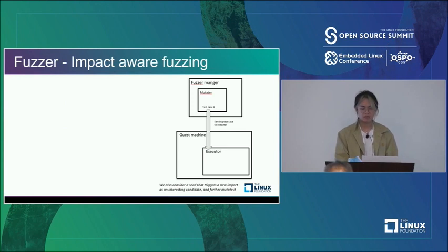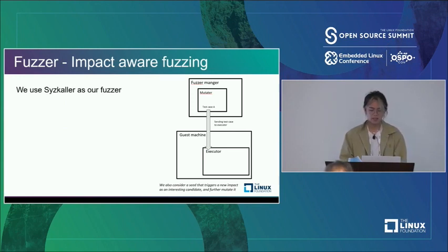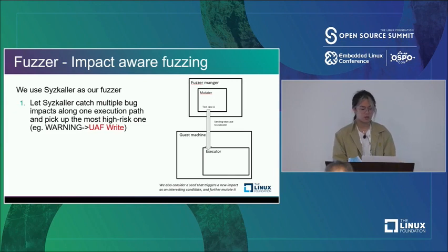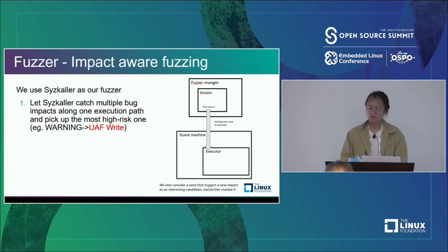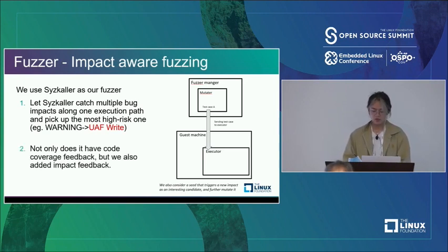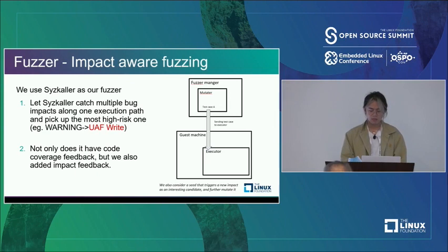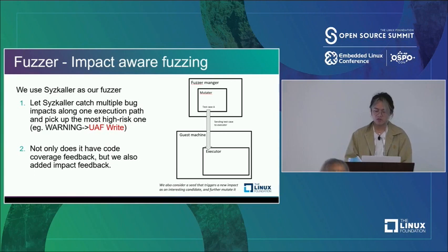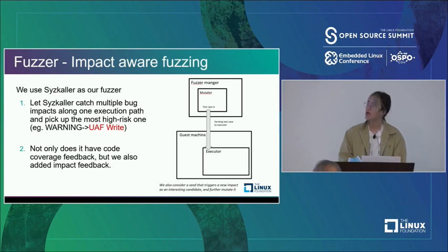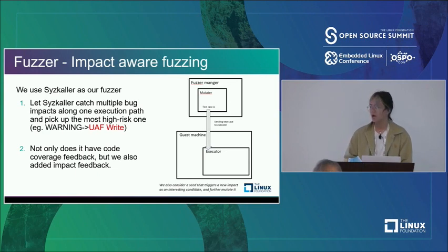We let the fuzzer capture multiple bug impacts along one execution path and pick the most high-risk one — in this case a UAF write. We also have an impact feedback mechanism: each new test case triggering a new bug impact is considered interesting and worth mutating further. Note that code coverage feedback is not our primary goal since we want to trigger different contexts of the same bug — code coverage could mislead us to unrelated code regions — so we use impact feedback instead.